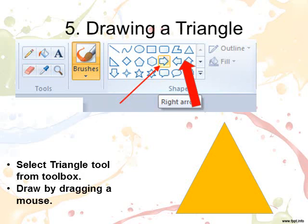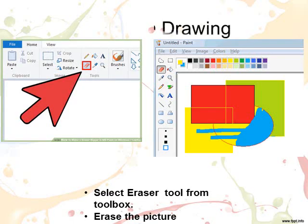Triangle tool. The triangle tool is used to draw a triangle. The steps to use the triangle tool are: select the triangle tool from the tools group. Move the mouse pointer to the drawing area and drag the pointer to draw a triangle.